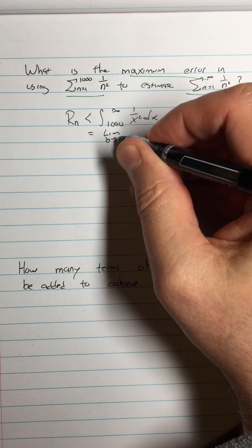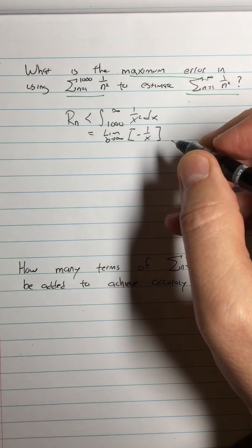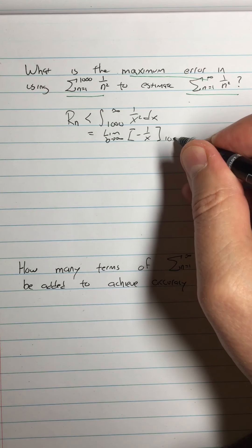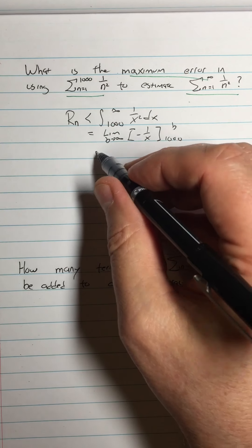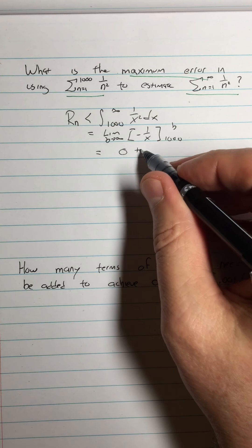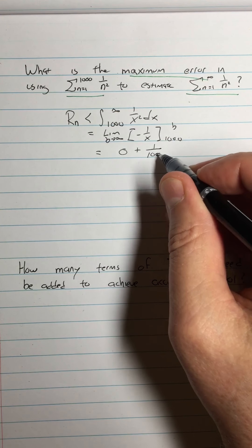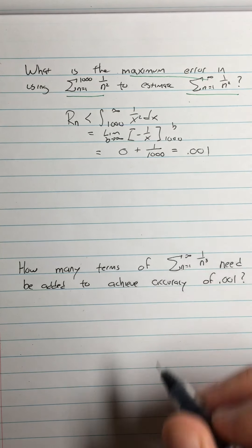So that integral is going to be - and as you can see, we sort of do the same thing a bunch of times - so I'm going to have limit as b versus infinity. The antiderivative is still negative 1 over x. You can guess what the result is going to be. We're going from 1,000 to b. When I plug in the b and do the limit as b approaches infinity, I'm going to get 0. And when I plug in the 1,000 and subtract a negative, I'm going to get plus 1 over 1,000. So I'm going to be within 1 1,000th.